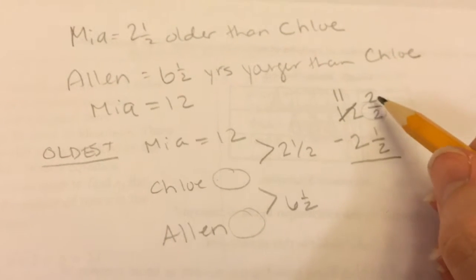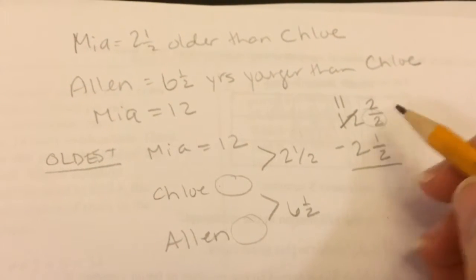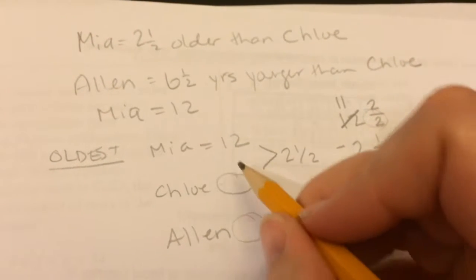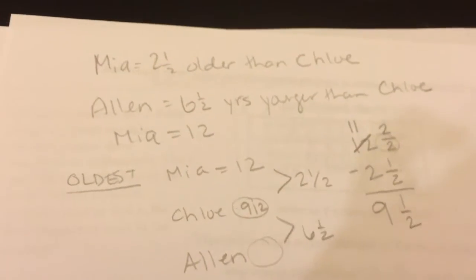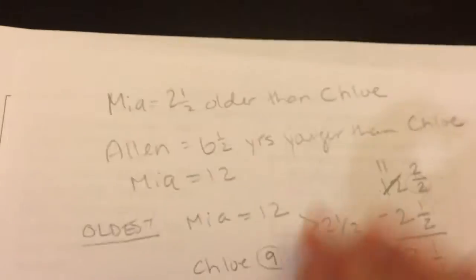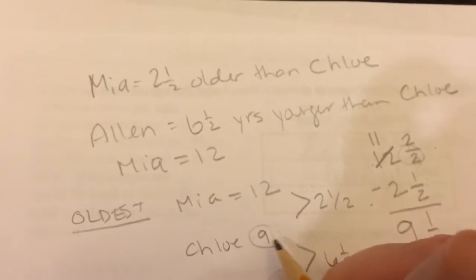So now I can do the subtraction. Same denominators. 2 minus 1 is 1. 11 minus 2 is 9. So Chloe is 9½. You can tell it's getting late. My handwriting is getting bad.